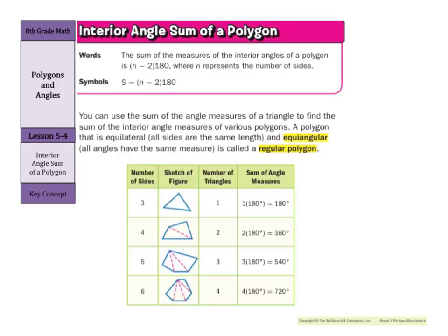One of our key concepts today is the interior angle sum of a polygon. In words, the sum of the measure of the interior angles of a polygon is (n - 2) times 180, where n represents the number of sides. And you can see the formula S = (n - 2) × 180.